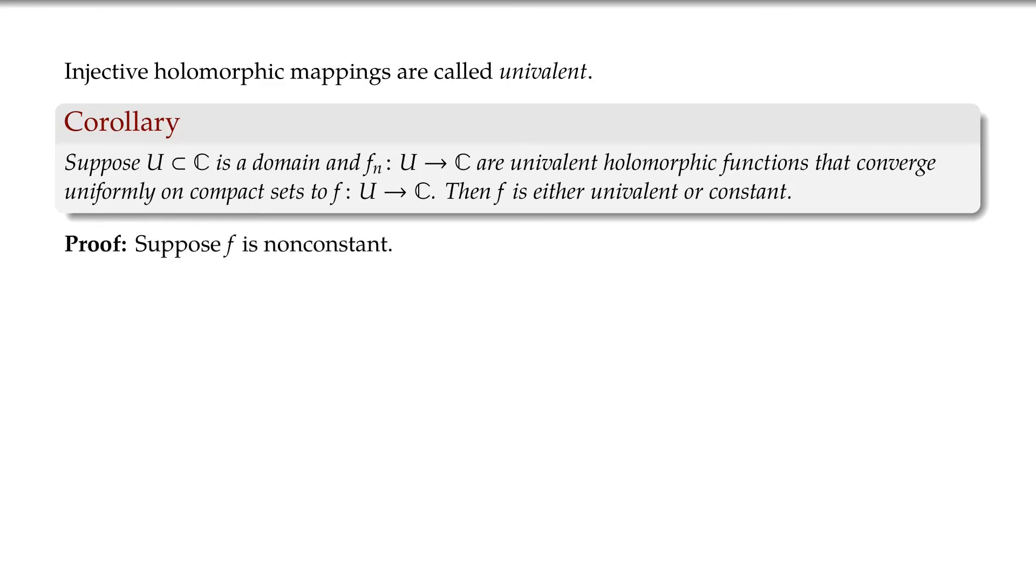All right. So suppose f is not constant. It's not constant locally, near every point. And this is where we use that it's a domain. Not constant somewhere, it's not constant everywhere, right? Because the derivative can, if it's constant somewhere, then the derivative would be identically 0 near there.